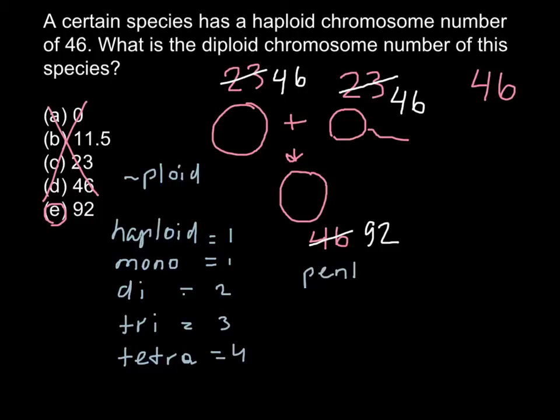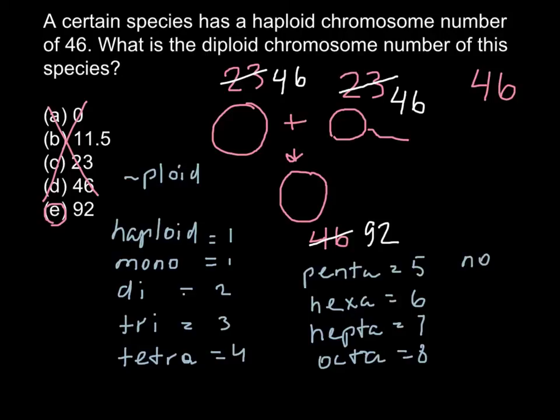Penta stands for five. Hexa stands for six. Hepta stands for seven. Nona stands for nine. And deca stands for ten.